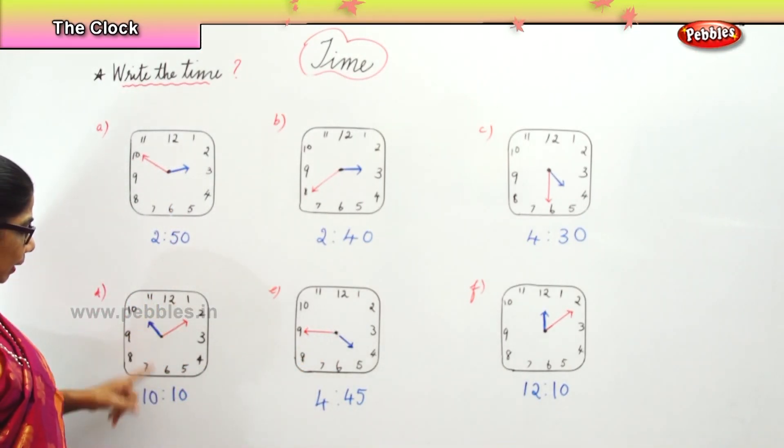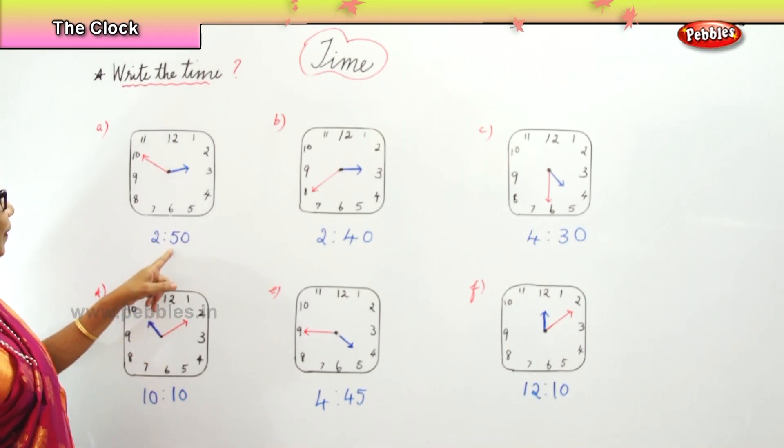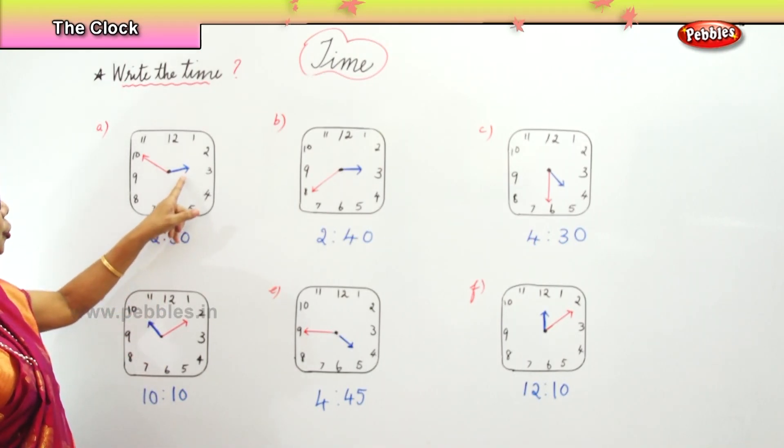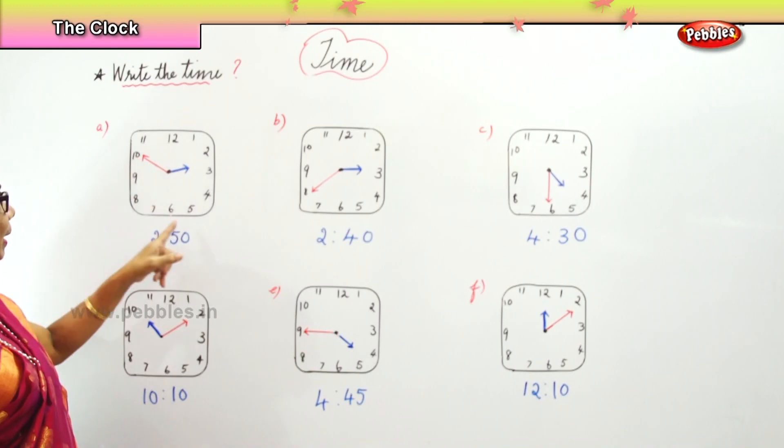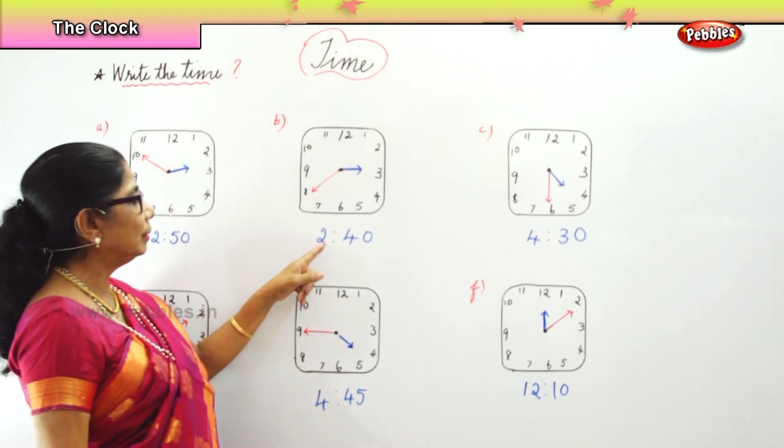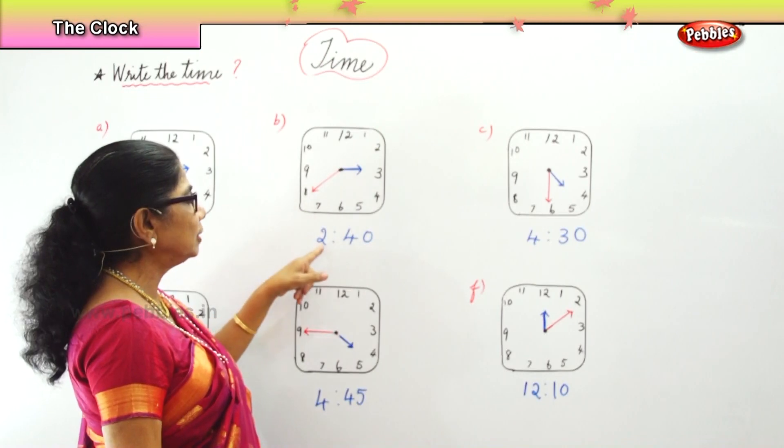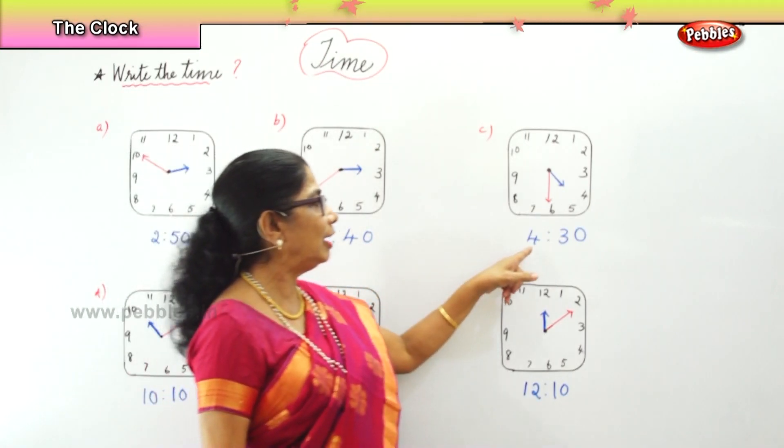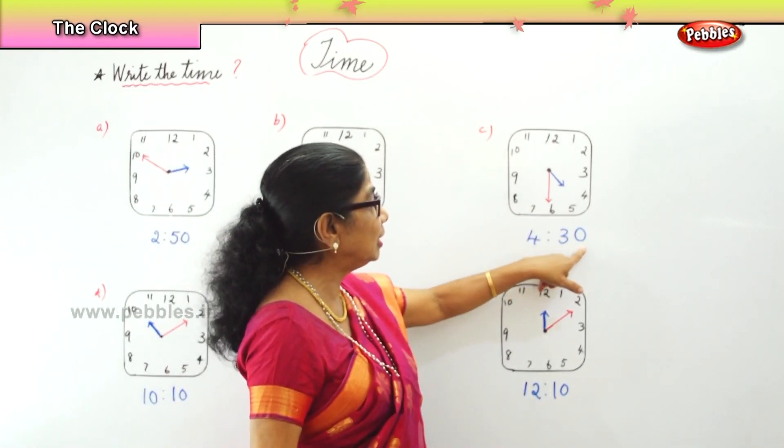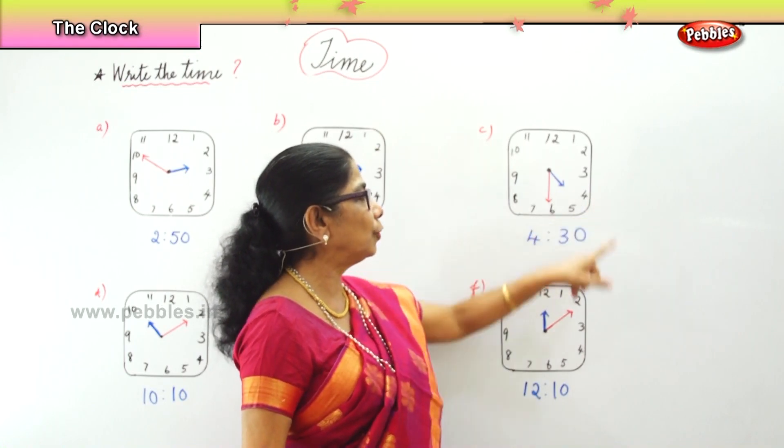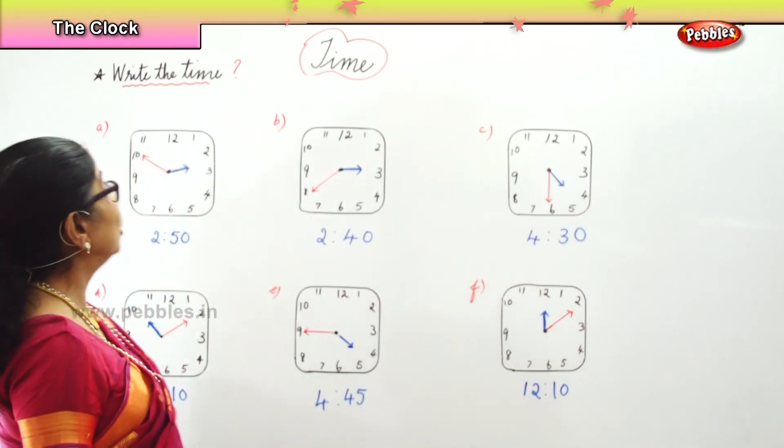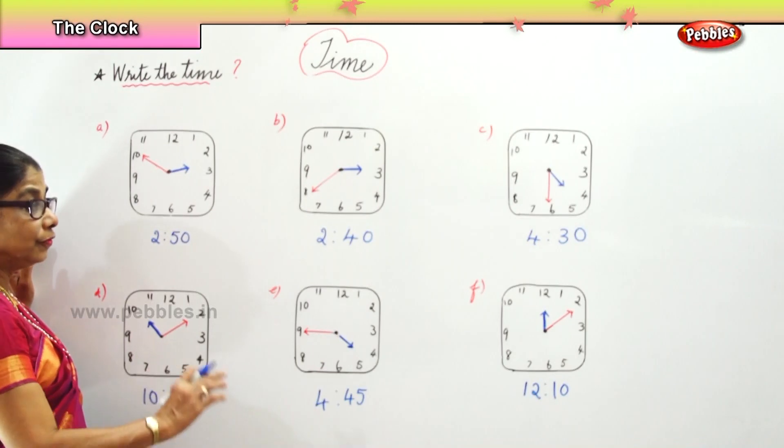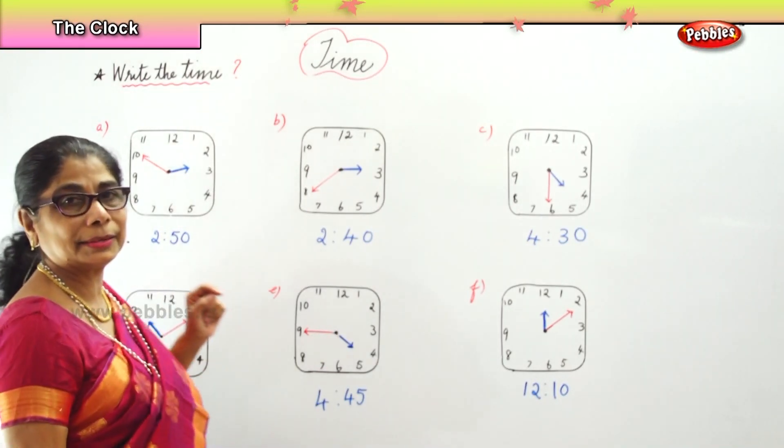Forty-five minutes past four, ten minutes past ten, fifty minutes past two, forty minutes past two o'clock, and finally you have thirty minutes past four o'clock. So we learn to write the time for each clock face.